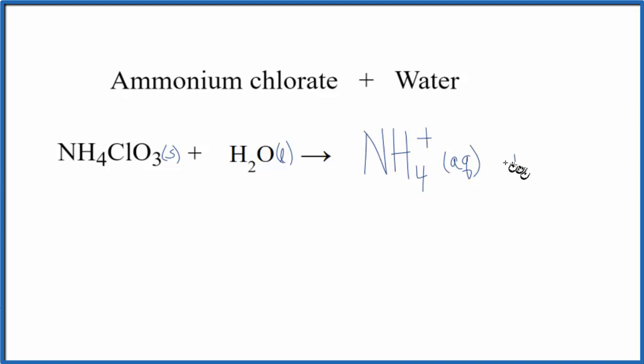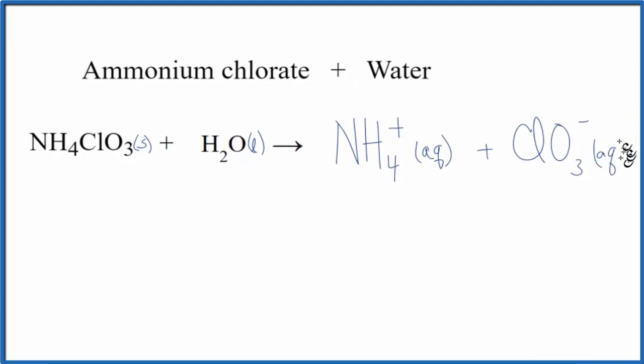And then we have our chlorate, ClO3 minus, which is also dissolved in that water. It's aqueous as well. Since these two ions are dissolved in water, we don't need to write water again on this side of the equation. It's implied.